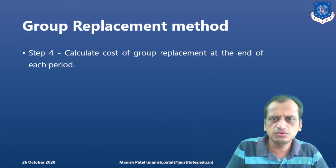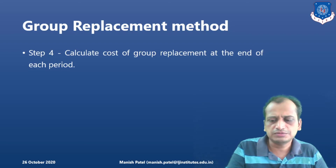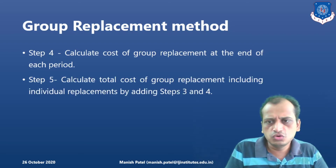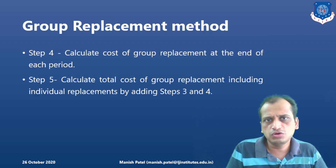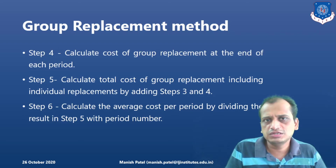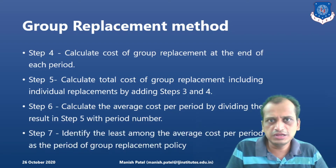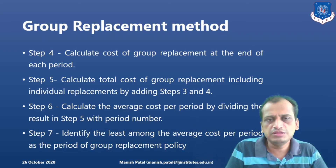In the group replacement method, at the end of each period — say one week or one month — we find out the cost of group replacement. Then in step five, we calculate the total group replacement cost including the individual replacement cost by adding step 3. In group replacement policy, we include both individual replacement as well as group replacement. In the sixth step, we calculate the average cost per period by dividing the total cost by the period number. We then analyze the trend — if the cost increases after a certain period, then the period with the least average cost will be the group replacement period.